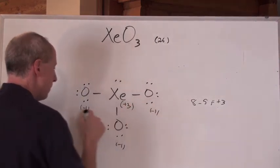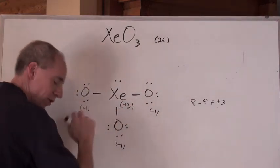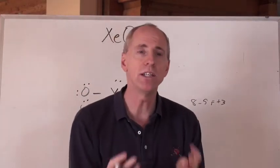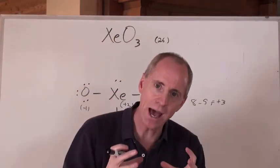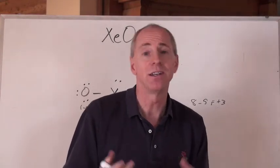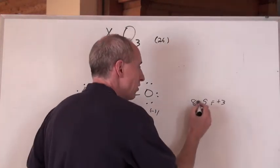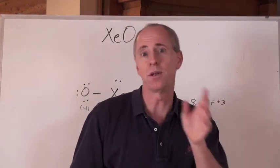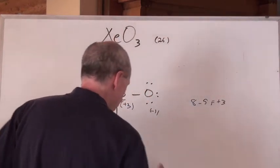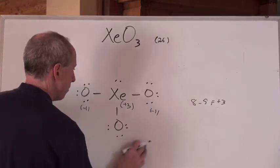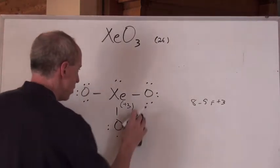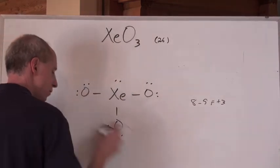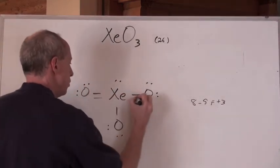Notice: minus 1, minus 1, minus 1, plus 3. That's not zeros for anything, so it's not as good. What do you do? Just take that central atom and start adding bonds. There's a difference of 3, so give it 3 more bonds. You're going to get those bonds from the oxygen lone pairs — take 1 from there, 1 from there, 1 from there. 1, 2, 3.